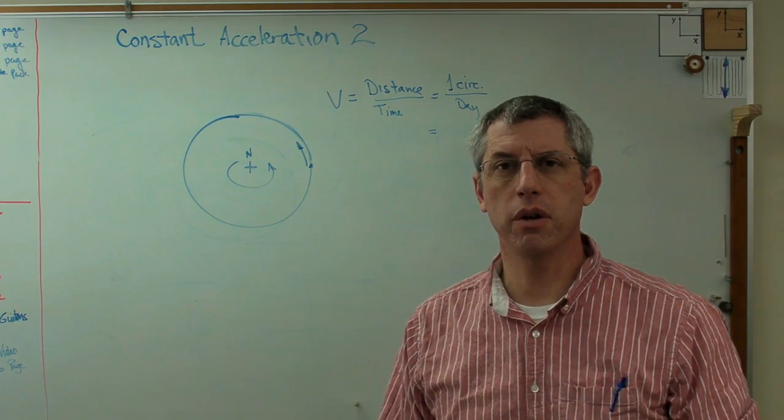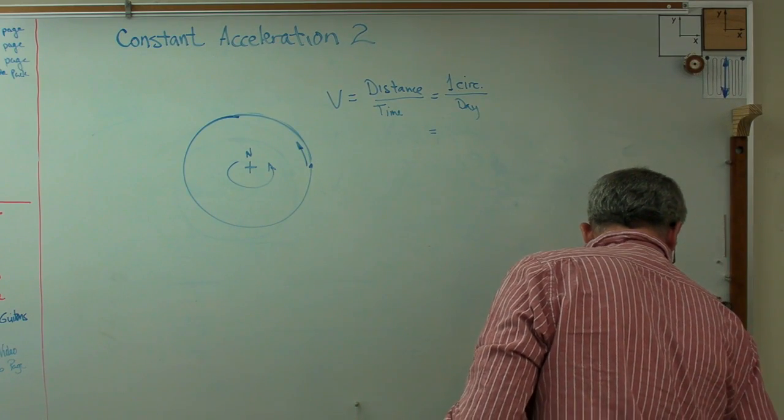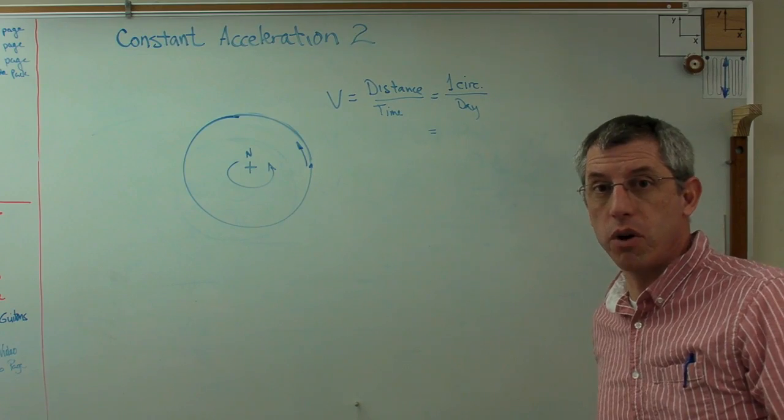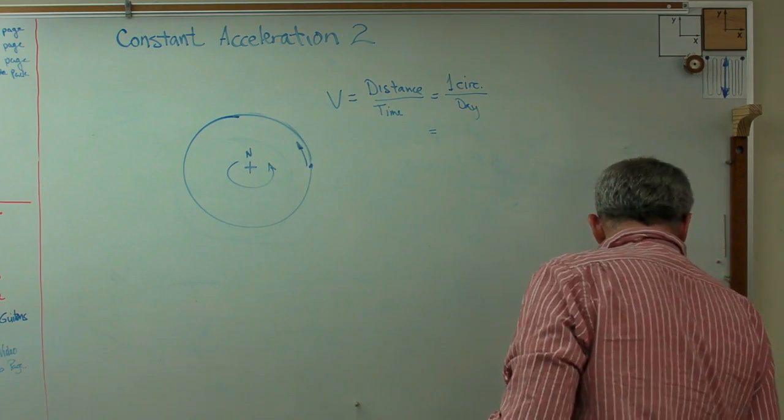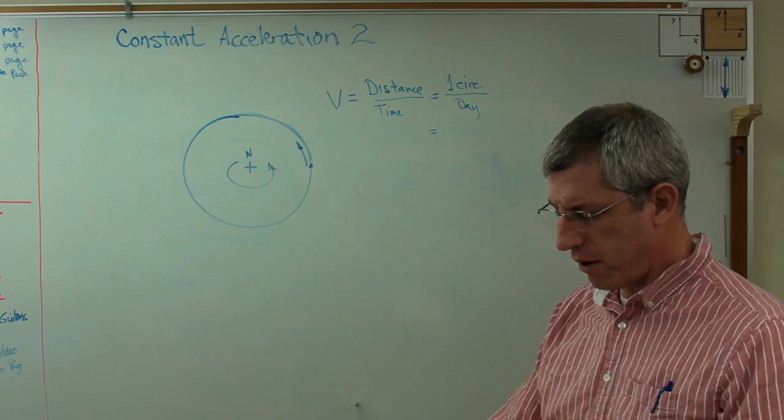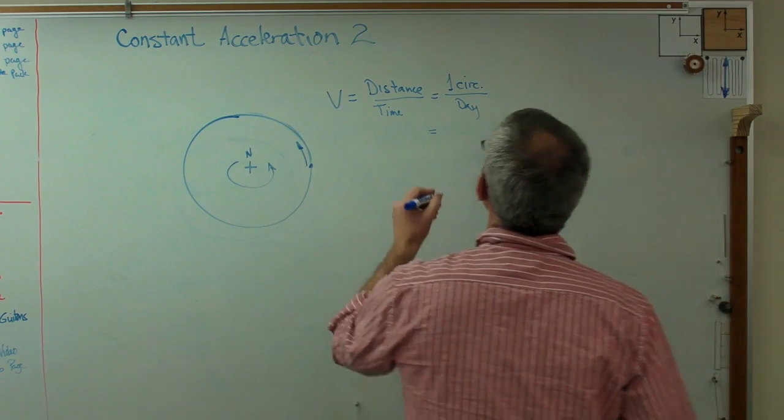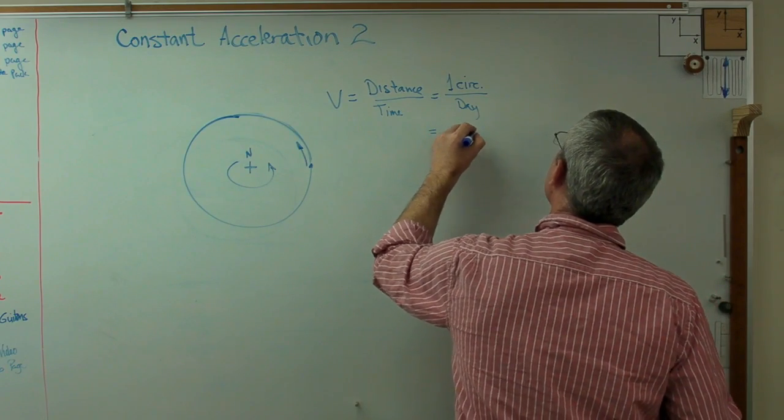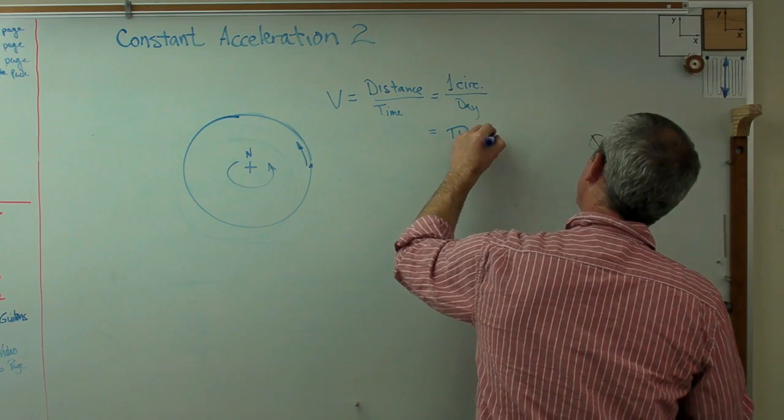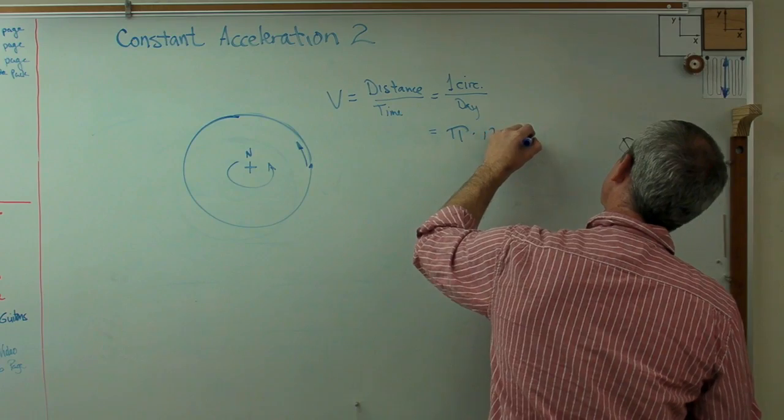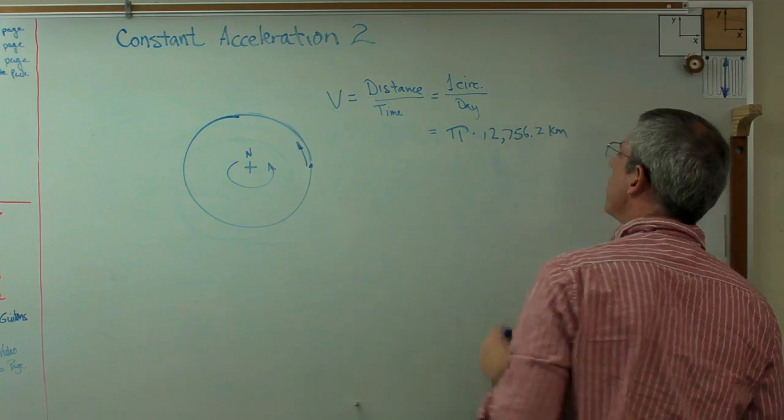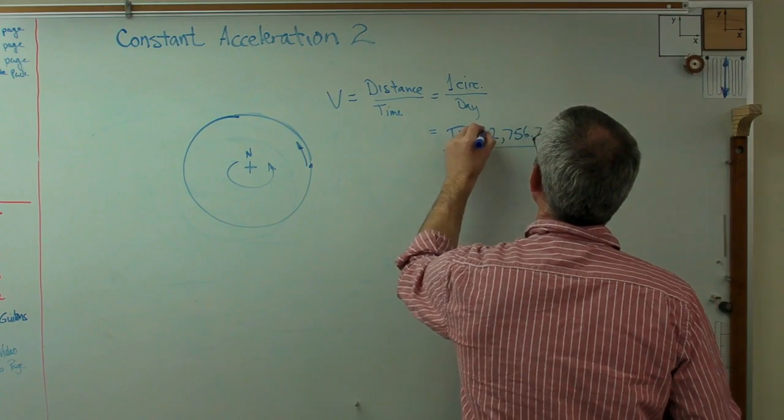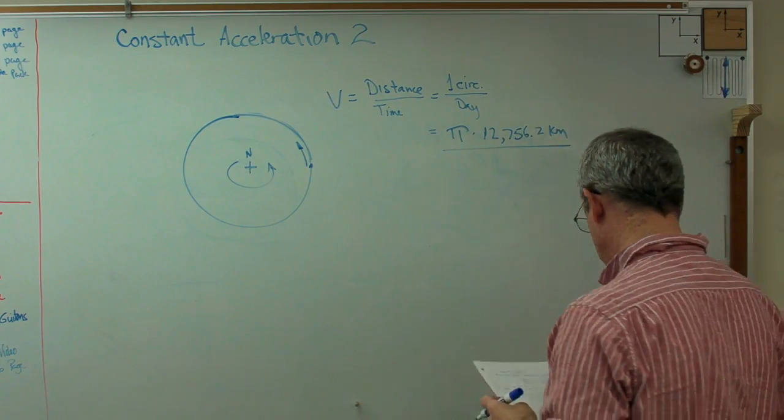How much is the circumference of the Earth? As you might guess, we know the diameter of the Earth really accurately. I wouldn't normally work to this many significant figures, but this number has been measured very accurately, so it's probably worth using here. Circumference is pi times the diameter, so pi times the diameter is 12,756.2 kilometers.